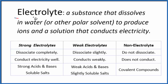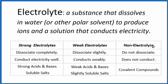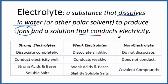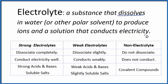In this video, we're going to look at electrolytes — definitions, examples, and how to classify them into strong, weak, and non-electrolytes. The definition we'll use: an electrolyte is a substance that dissolves in water and produces ions. Because it produces ions, the solution can conduct electricity. A big question we need to address right away is this idea of ions.